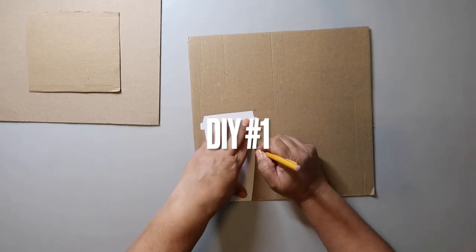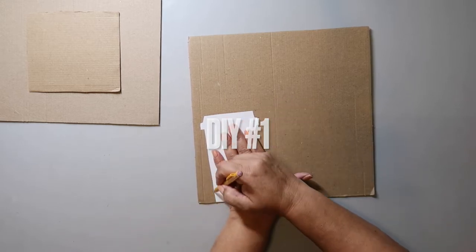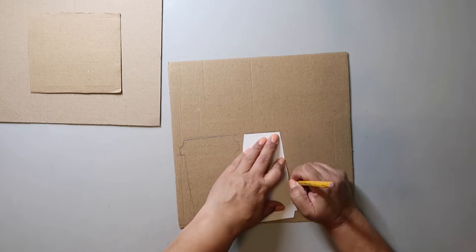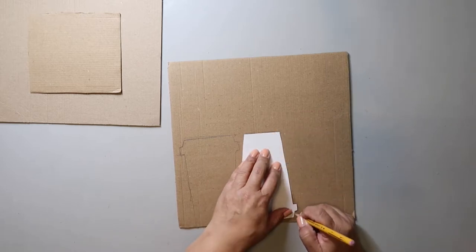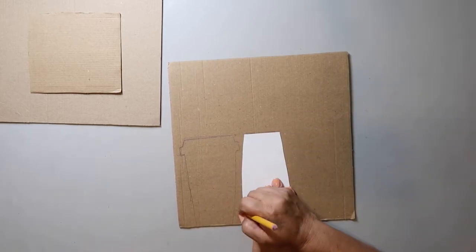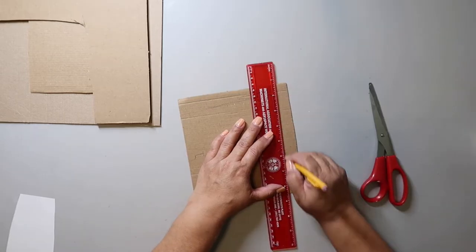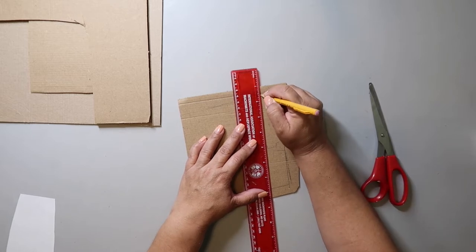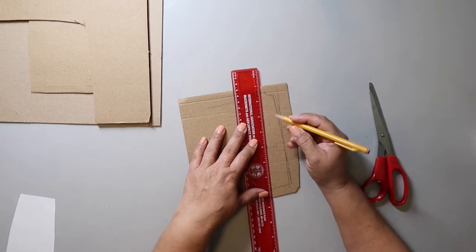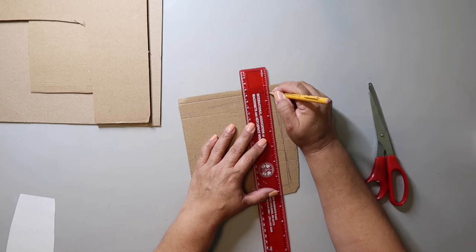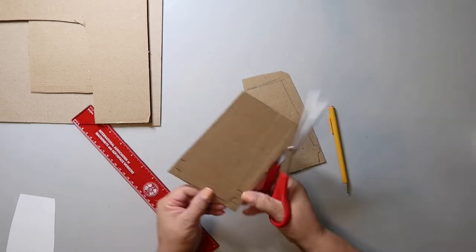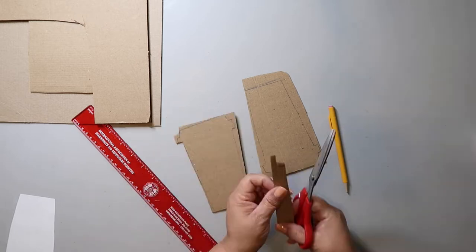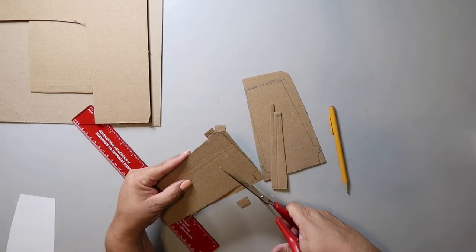To make DIY number one, I'm taking some thin cardboard and I Googled a Starbucks cup image to use to trace that onto the cardboard. And I'm cutting out a second and third piece as well. And I didn't realize that the top and bottom weren't level or matching up with each other, so I'm going back and trying to even that out and make sure that both shapes match up.